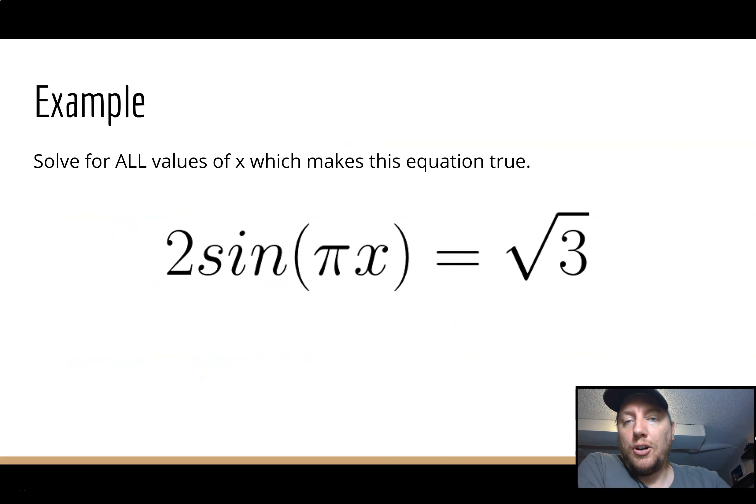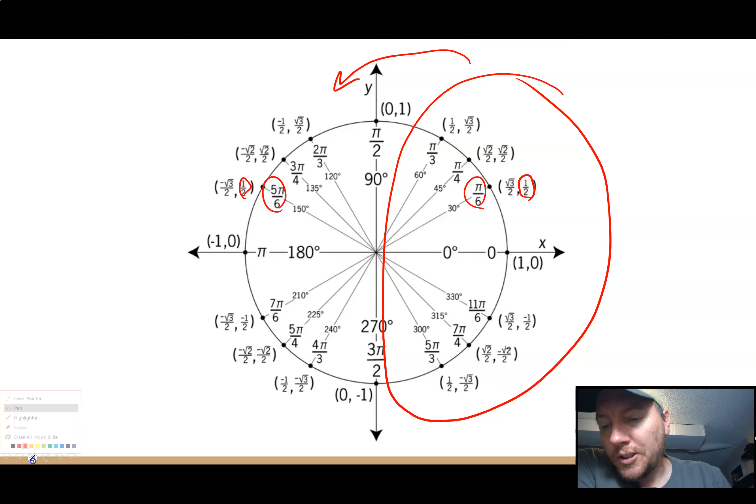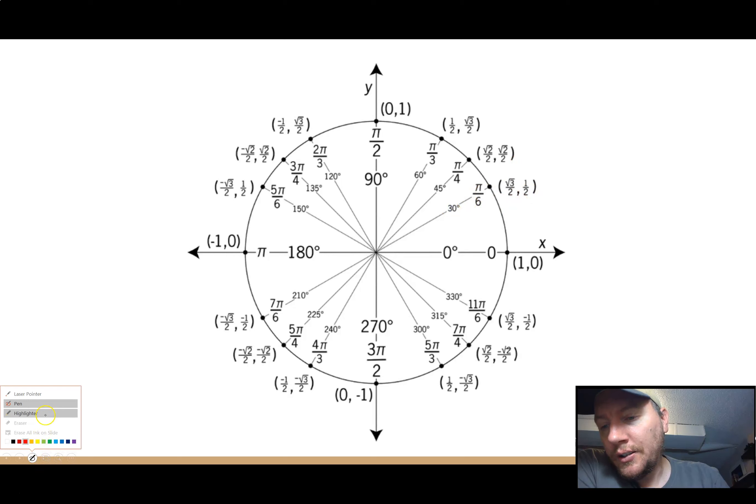Solve for all values of x which makes this equation true. So the all values adds an extra layer of difficulty here. So I'll show you what that means in a minute. 2sin(πx) equals √3. So I'm going to go ahead and divide by 2, so √3/2. Now my trig function is isolated. There is an additional π inside, but that's fine. I'm going to write πx equals inverse sine of √3/2. And once again, that is sine, so √3/2. Find √3/2 on the y-value, that's positive. √3/2 here and there. So π/3 and 2π/3.